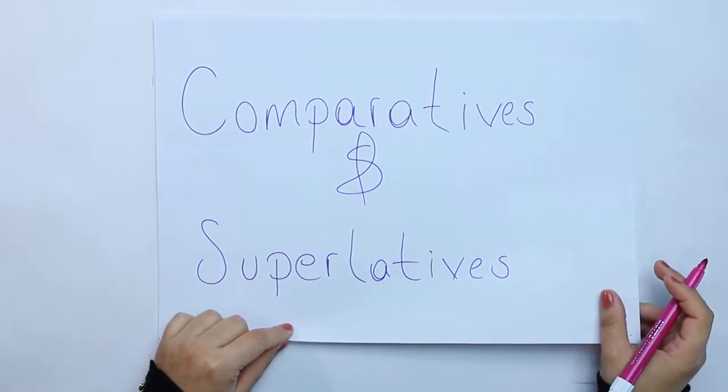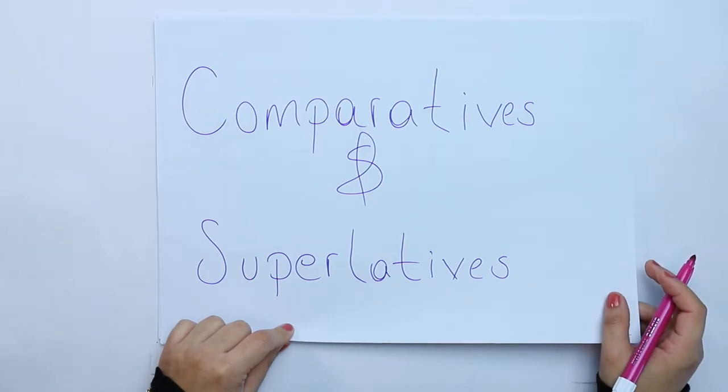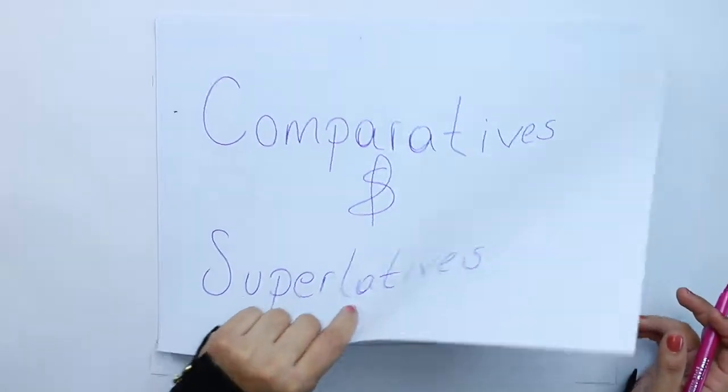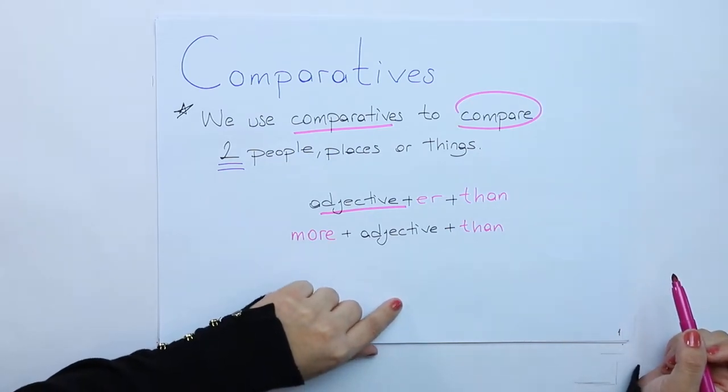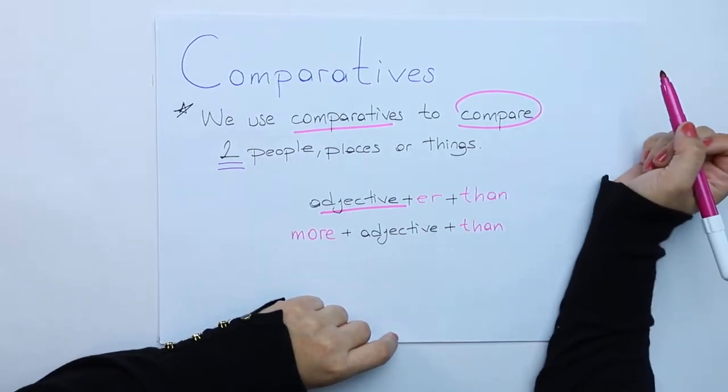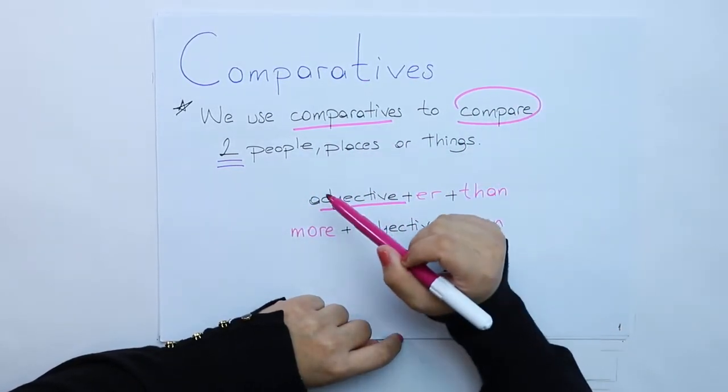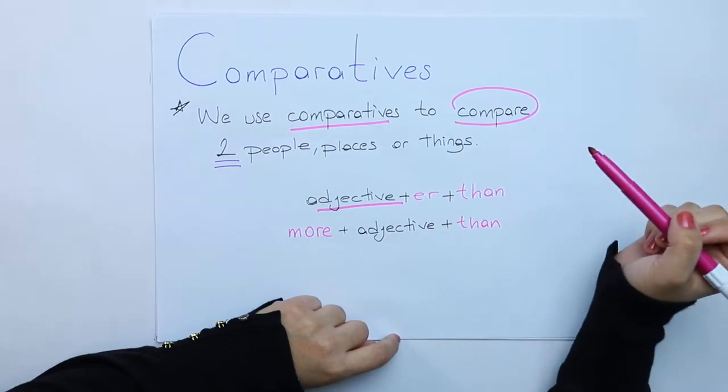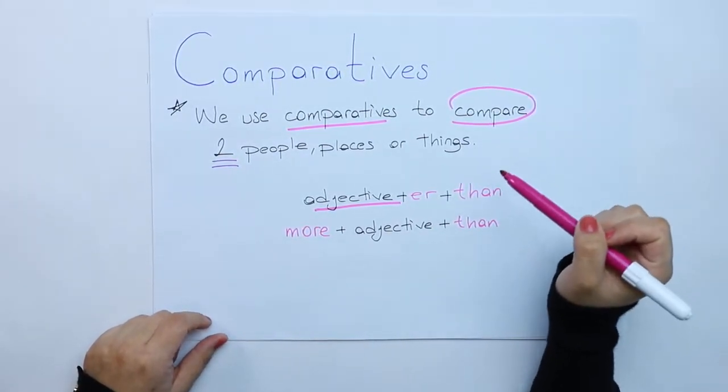Hi everyone, today we will talk about the comparative and the superlative form of adjectives. The first one will be the comparative form. We use comparatives to compare two people, places, or things. In here the most important part is two people, places, or things.